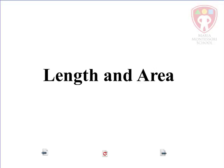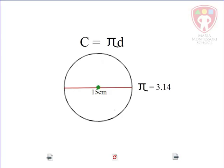We know that the circumference C equals πd. Here we have a circle where the diameter is 15 centimeters and π is 3.14.